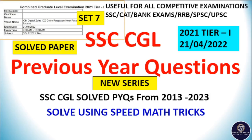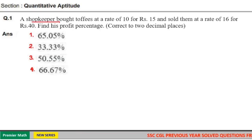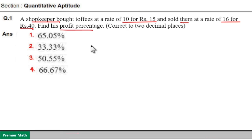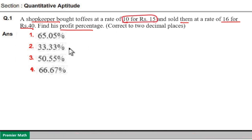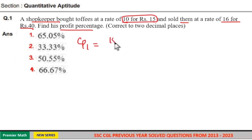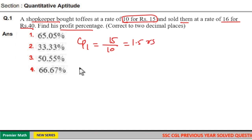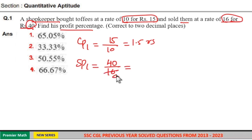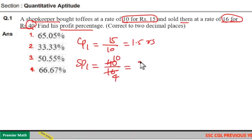Our first question: a shopkeeper bought toffees at a rate of 10 for Rs.15 and sold them at a rate of 16 for Rs.14. We need to find the profit percentage. Take the cost price and sell price of 1 toffee. He bought 10 toffees at Rs.15, so cost price of 1 toffee is 15 divided by 10, which is 1.5 rupees. Sell price of 1 toffee is 14 divided by 16, which equals 10 by 4, that is 2.5 rupees.